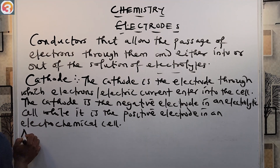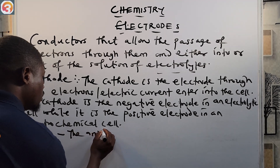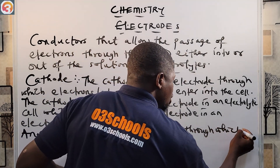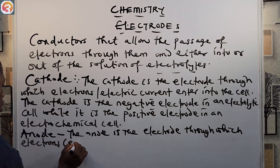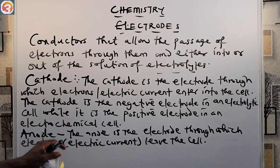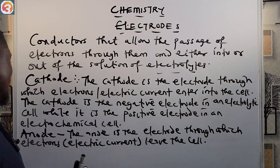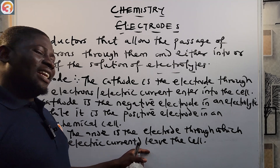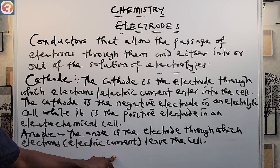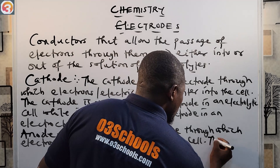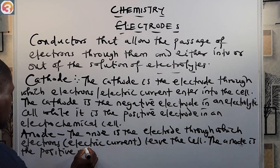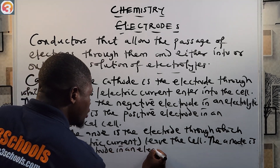Now let's look at the anode. The anode is the electrode through which electrons or electric current leave the cell. While the cathode is the electrode through which electric current enters, the anode is the electrode through which it leaves. For an electrolytic cell, the anode is the positive electrode.